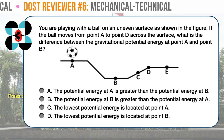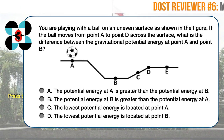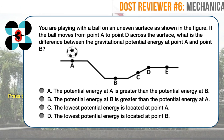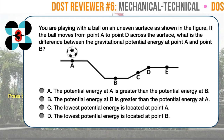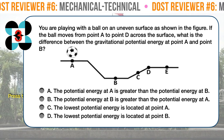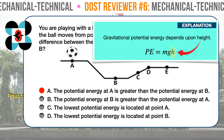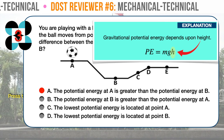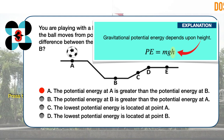Question number three. You are playing with a ball on an uneven surface as shown in the figure. If the ball moves from point A to point D across the surface, what is the difference between the gravitational potential energy at point A and point B? The correct answer is A: the potential energy at A is greater than the potential energy at B. Gravitational potential energy depends upon height, as evident from its formula: PE equals MGH, where M is the mass, G is the acceleration due to gravity, and H is the height. Since point A is located at a point higher than point B, the potential energy at A is greater than the potential energy at B.